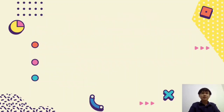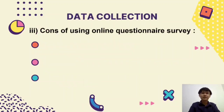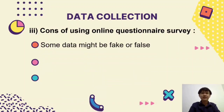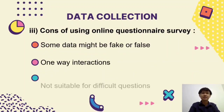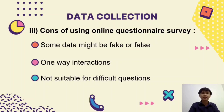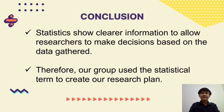In contrast, there are three cons of using an online questionnaire survey: firstly, some data might be fake; secondly, one-way interactions; and lastly, it is not suitable for difficult questions. In conclusion, statistics show clearer information to allow researchers to make decisions based on the data gathered. Therefore, our group used statistical terms to create our research plan. Thank you.